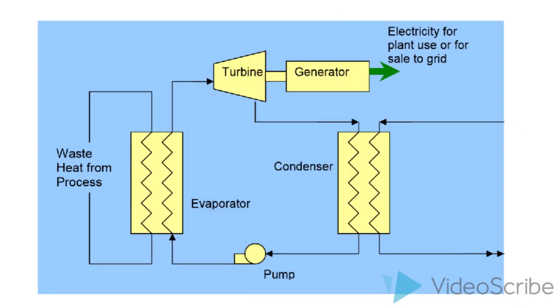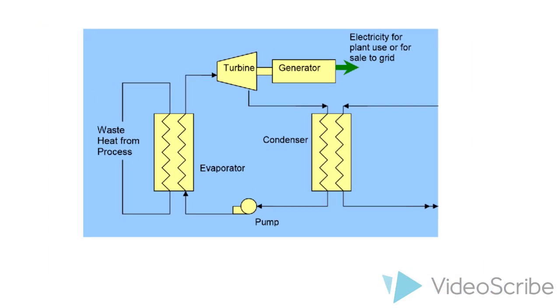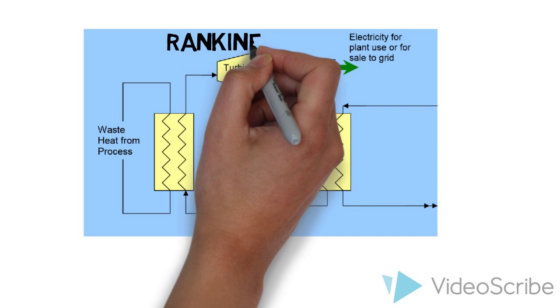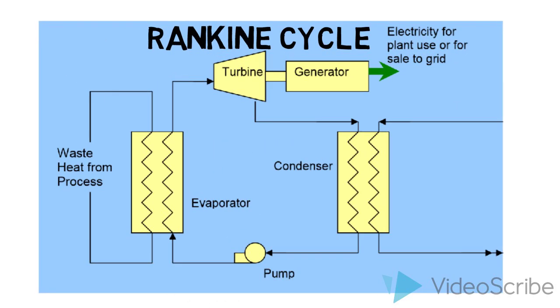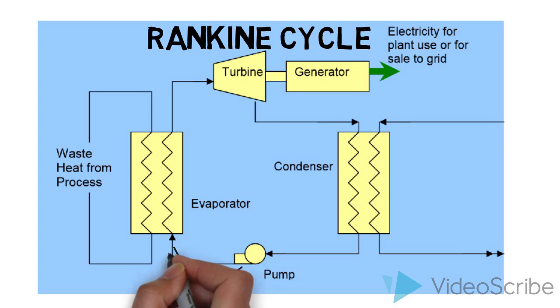Now let's talk about power generators. For the heat to be completely reused as additional energy, it has to produce energy through a generator. The most common method is the Rankine cycle. In the first stage, water is pumped from the condenser to the evaporator.